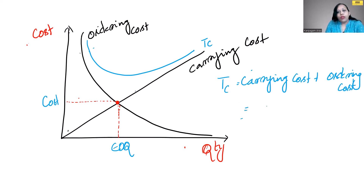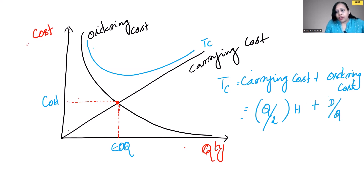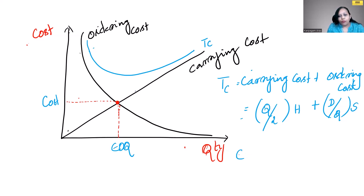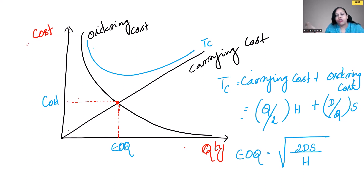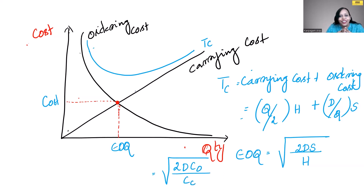Beyond the EOQ point, if you order more, the carrying cost goes up. Below the EOQ point, the ordering cost goes up. The total cost formula is: Total Cost = (Q/2) × H + (D/Q) × S, where carrying cost and ordering cost are added together. Higher the number of orders placed, higher is the ordering cost. For calculating EOQ, using differentiation, the formula simplifies to: EOQ = √(2DS / H), which is the square root of 2 times demand times setup cost divided by holding cost. You can also express this as √(2 × D × CO / CC) using alternative notation.